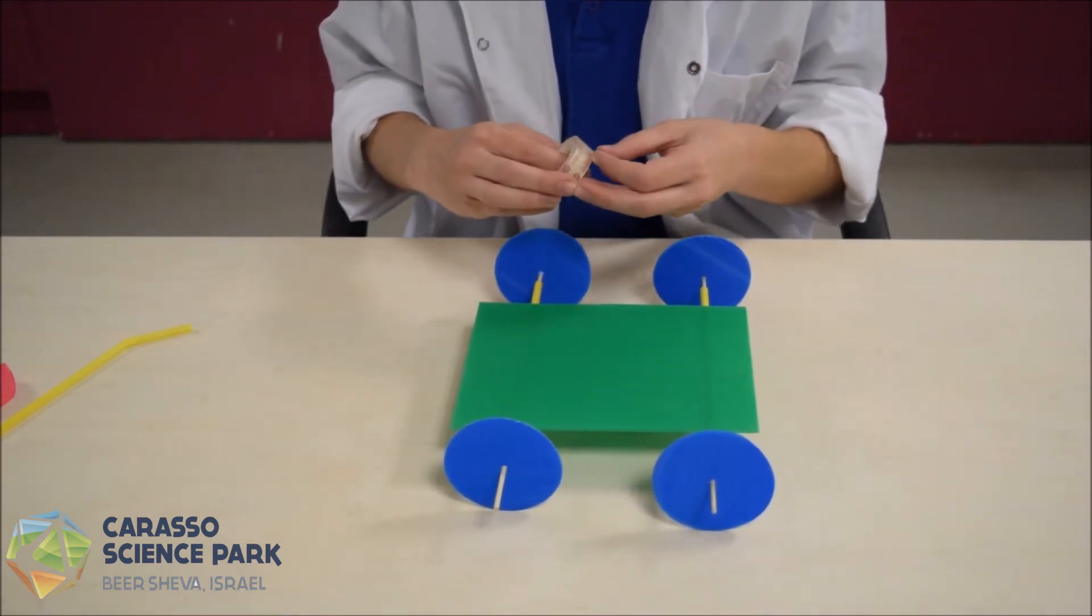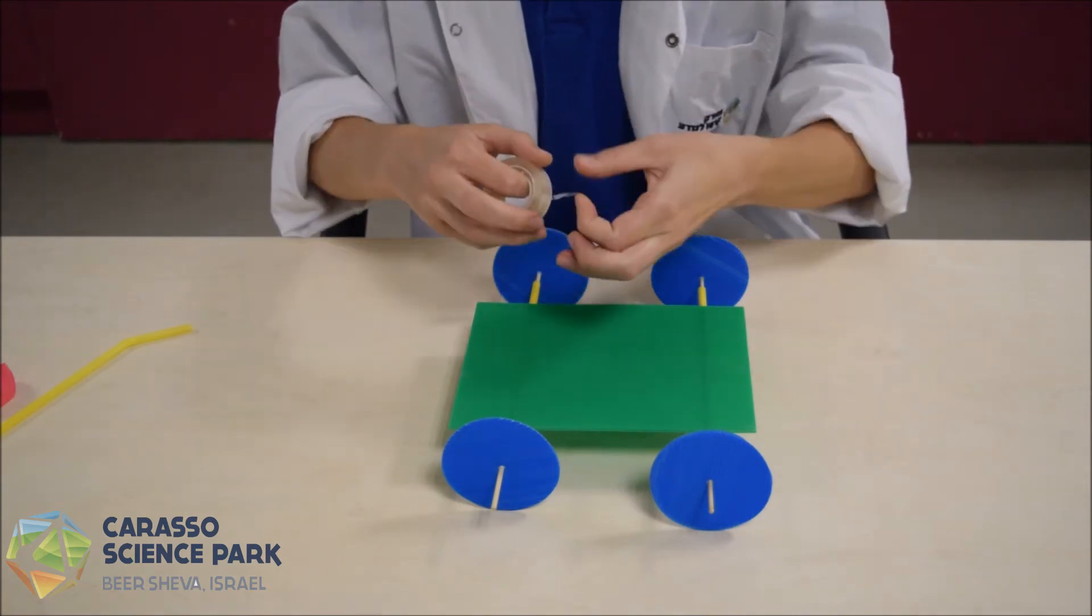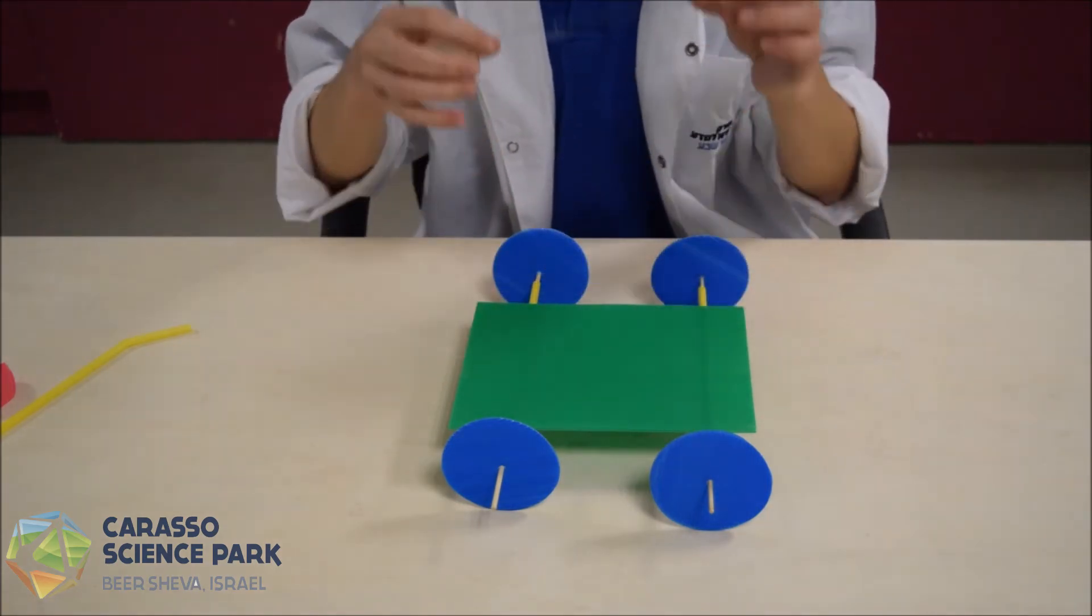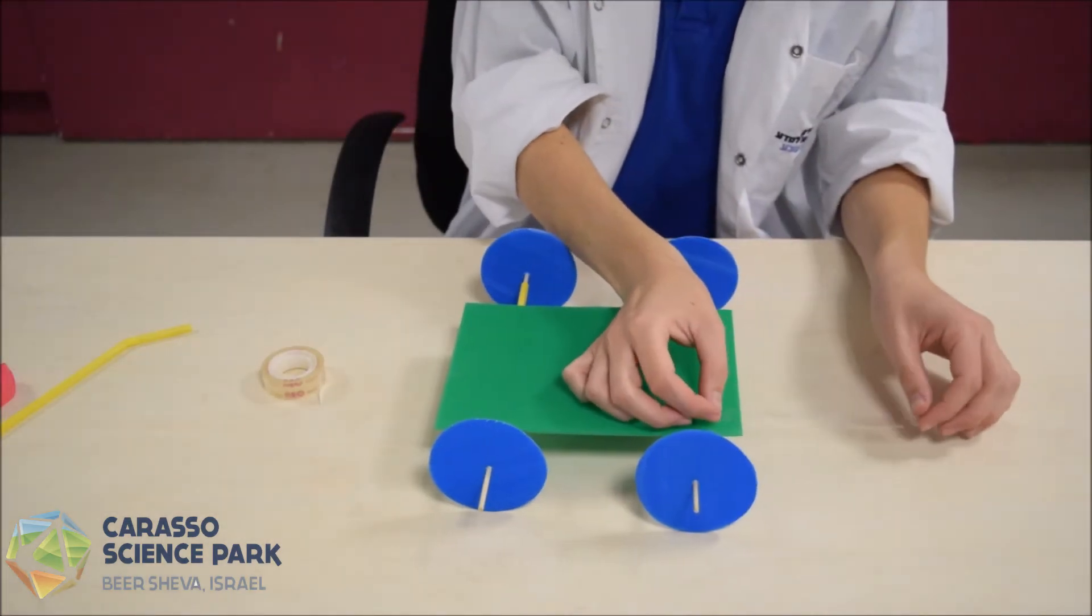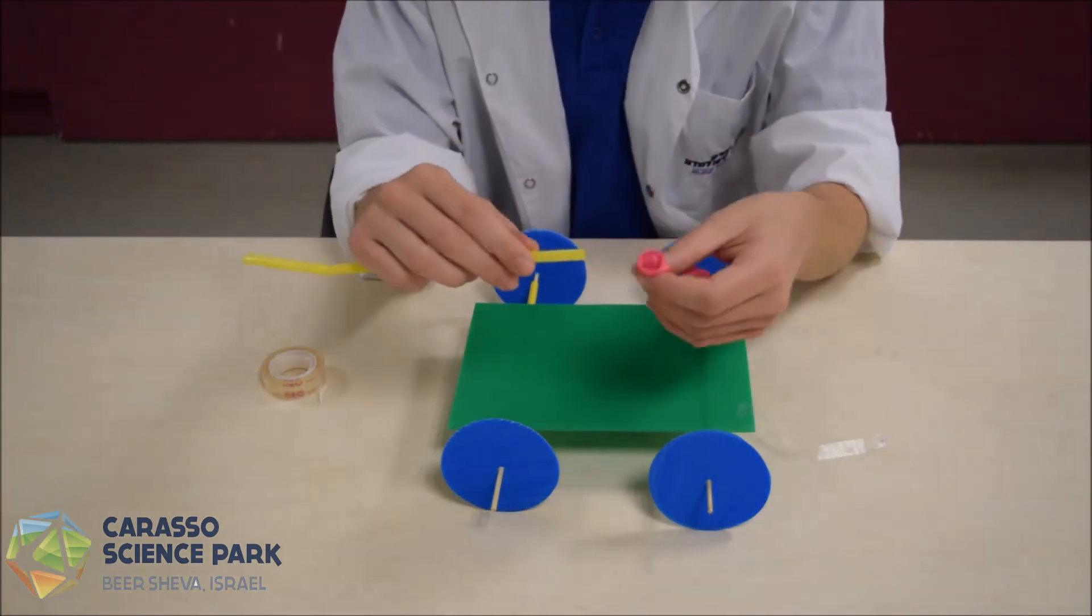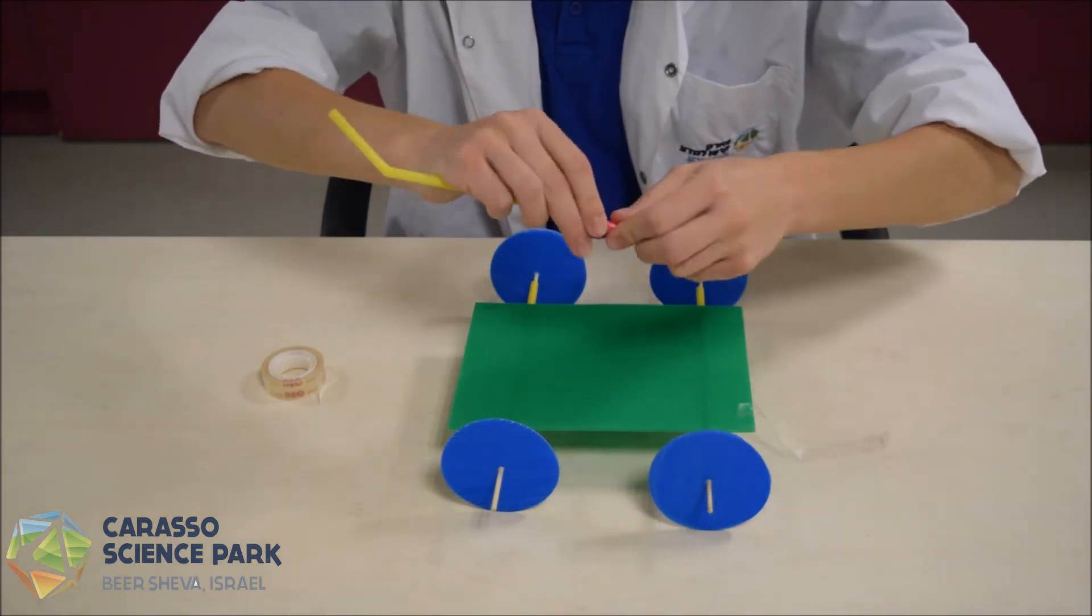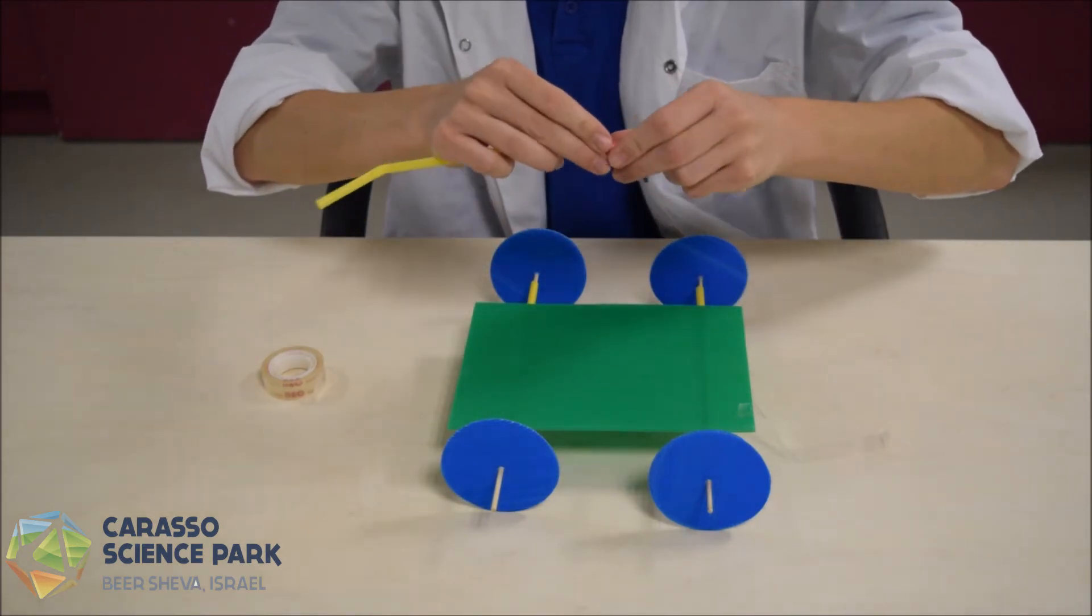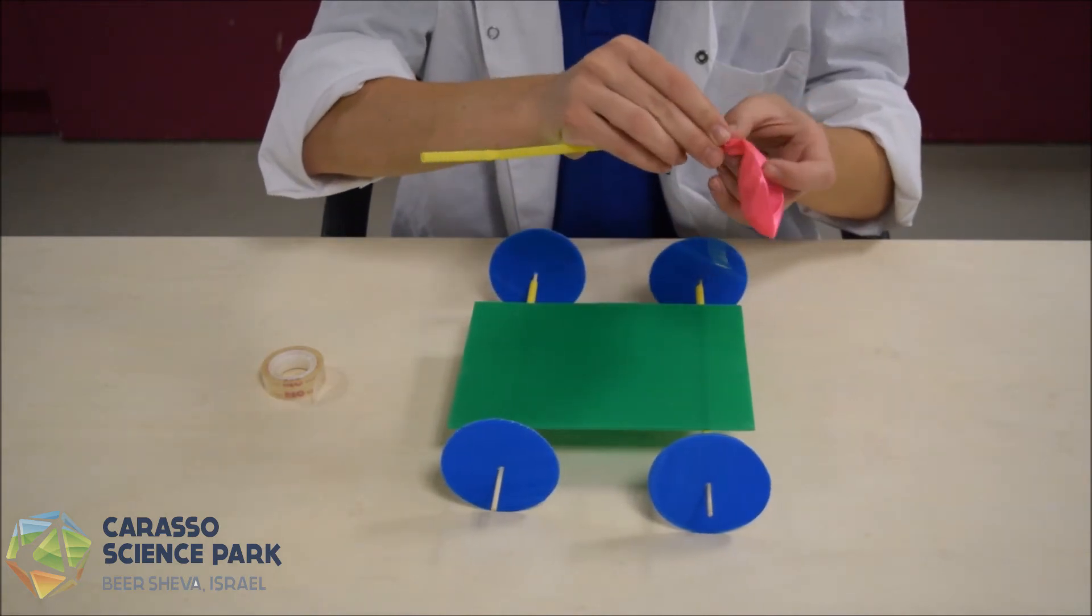The last part of our car is the motor. We'll take a big piece of scotch tape and put it aside, and attach the balloon to the straw. The best way to do it is to twist and tape it on like that.